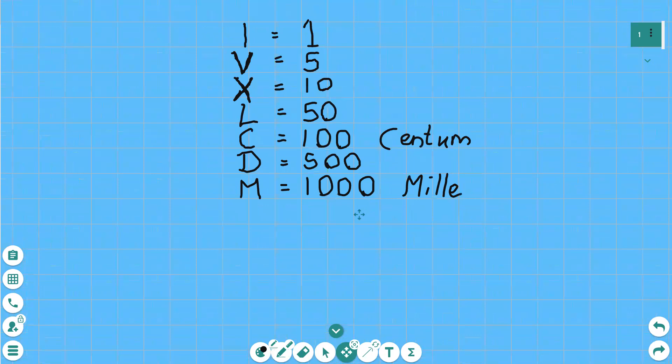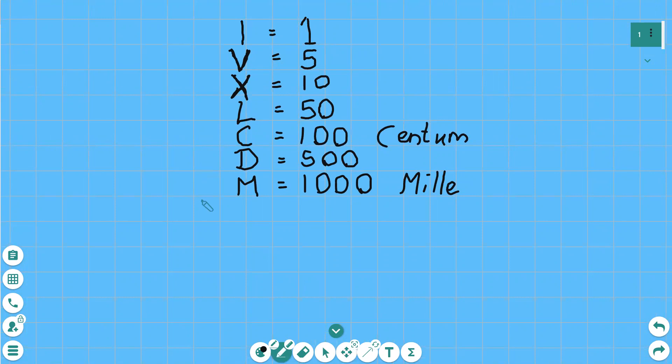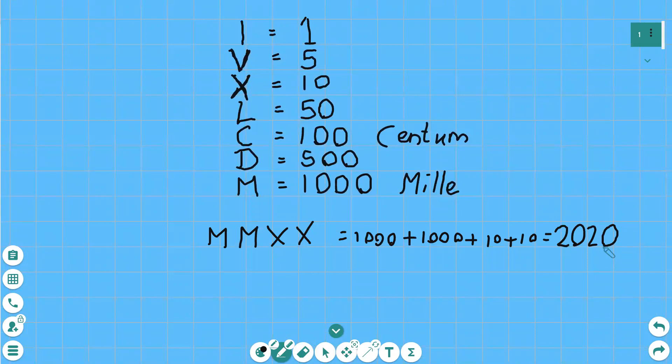Roman numerals basically the bigger numbers go to the left generally speaking, and then the smaller numbers to the right. For example if we have MMXX, well we got one M that's a thousand isn't it. Then we got another M that's another thousand. Then we got 10 and 10. So obviously a thousand and a thousand is 2000. A 10 and a 10 is 20. So that is the year I am doing this video in which is 2020. A year never to be forgotten.